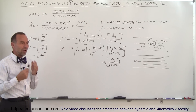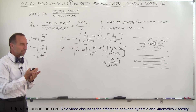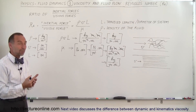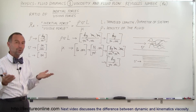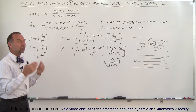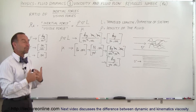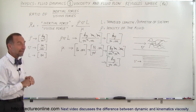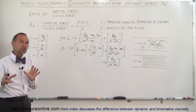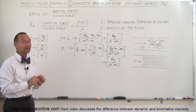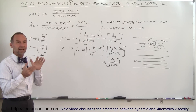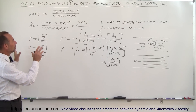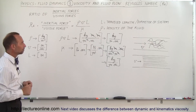Depending upon the geometry, if the Reynolds number is typically greater than 2,000 you end up with turbulent flow; if it's less than 2,000 you generally end up with laminar flow. That again depends a lot on the specific situation, which I'll discuss in more detail for different geometric situations later.